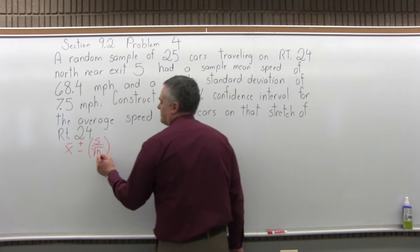So, the formula that we need to use is x bar plus or minus s, the sample standard deviation, over square root of n, the sample size, times t sub c, the confidence coefficient.